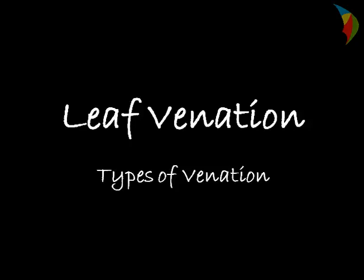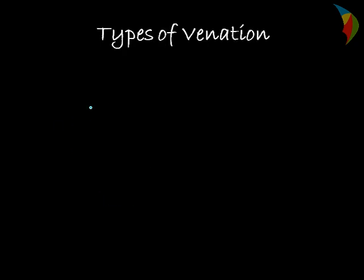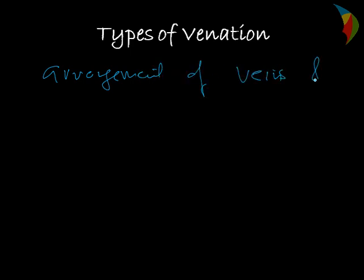Hello friends. Today we will discuss about leaf venation and types of leaf venation. We can describe venation as the arrangement of veins and veinlets in the lamina — the arrangement of veins and veinlets on the surface of the lamina. This is called venation.